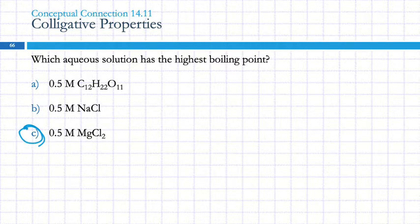What if they're asking which one has the lowest boiling point? That'd be the one with the fewest particles, which would be A. This one has twice as many particles as A, and this one has about three times as many particles as A.